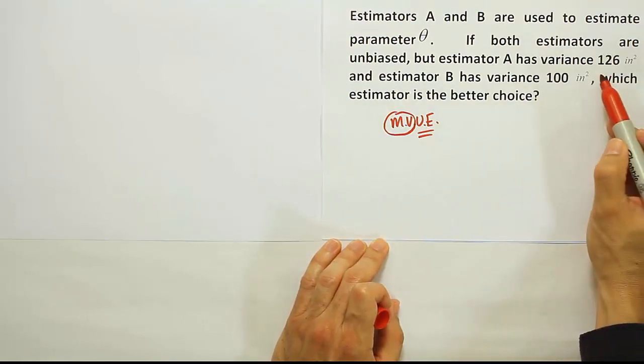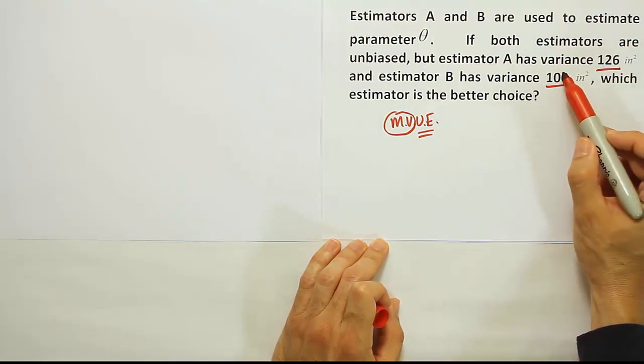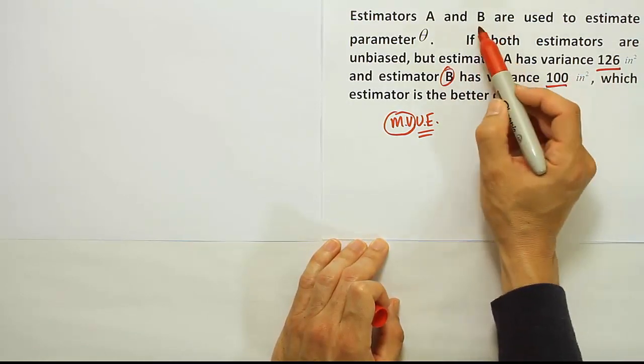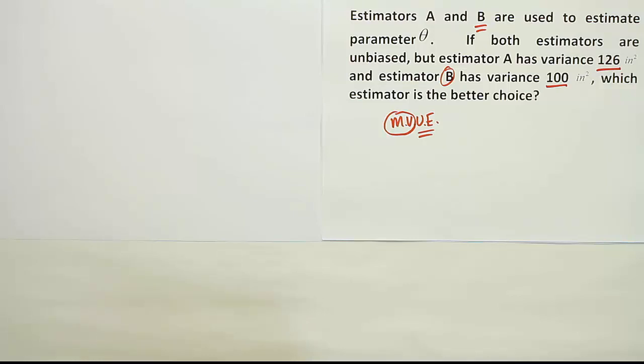So between these two, you have 126 versus 100. The 100 is the smaller, so estimator B is the preferred choice. So we'll choose B as our choice.